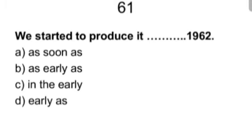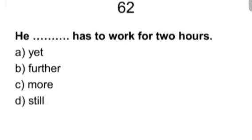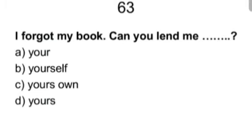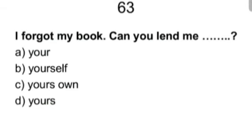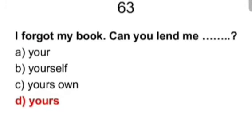Sixty one. We started to produce it blank 1962. As soon as, in the early, as early as, only early as. Answer is as early as. We started to produce it as early as 1962. Sixty two. He blank has to work for two hours. Yet, furthermore, still. Answer is still. He still has to work for two hours. Sixty three. I forgot my book. Can you lend me your, yourself, yours, own, yours? Answer is yours. I forgot my book. Can you lend me yours?